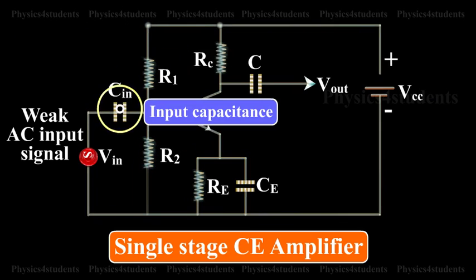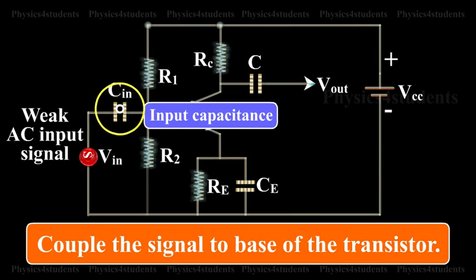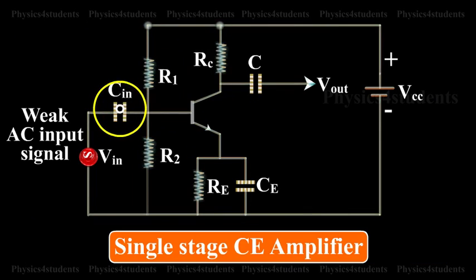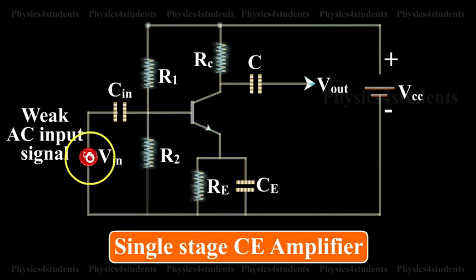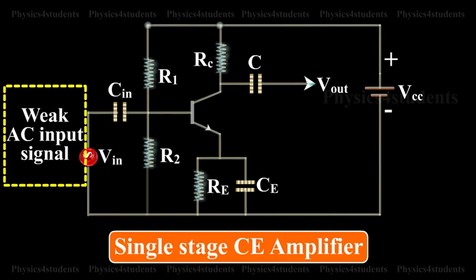Input Capacitance: This is used to couple the signal to the base of the transistor. If this is not used, the signal source resistance will come across R2 and thus change the bias. The capacitor CIN allows only AC signal to flow.